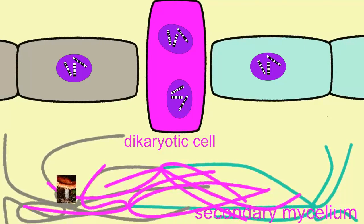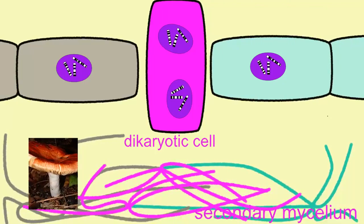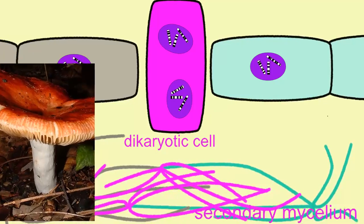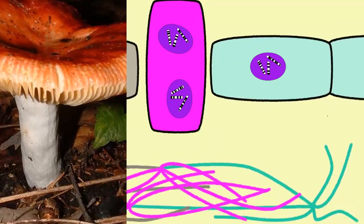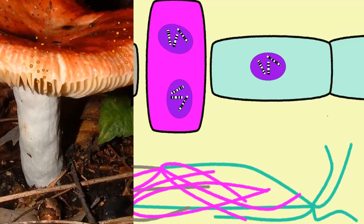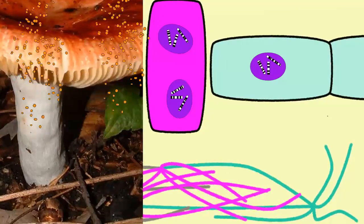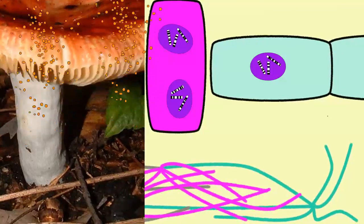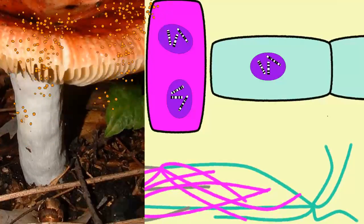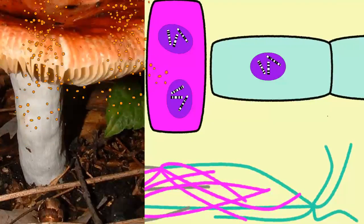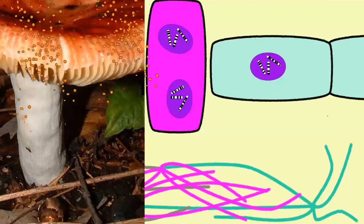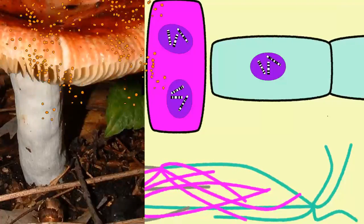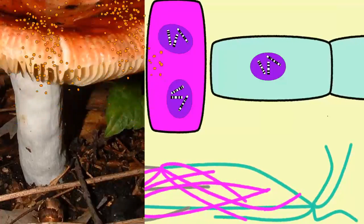From the mass of hyphae known as the secondary mycelium, a basidiocarp — what we would recognize as a mushroom — will form. Within the gills of this basidiocarp, millions and millions of haploid spores which will produce monokaryotic hyphae will form, and the life cycle will begin again.